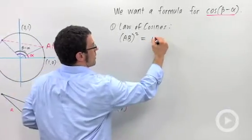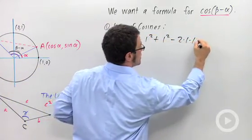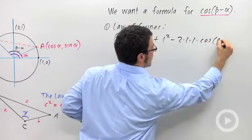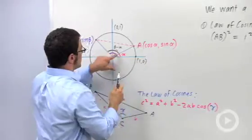So 1 squared plus 1 squared minus 2 times 1 times 1 times the cosine of beta minus alpha. Beta minus alpha, again, is this angle.